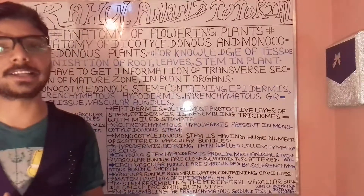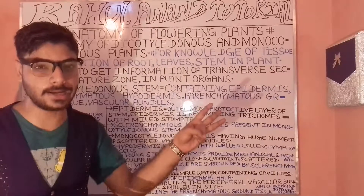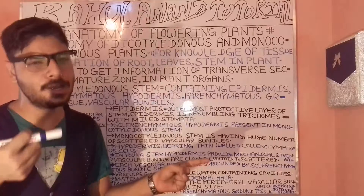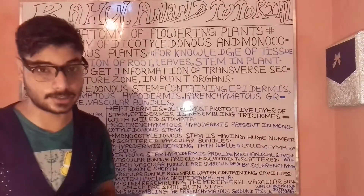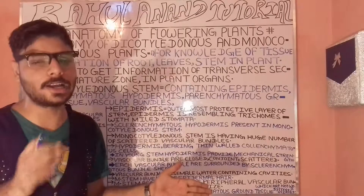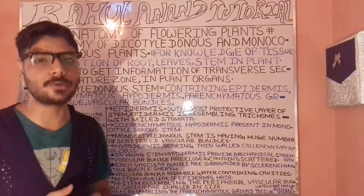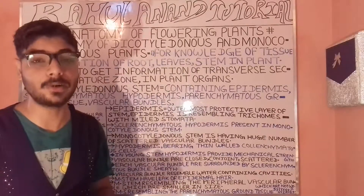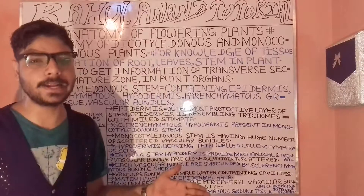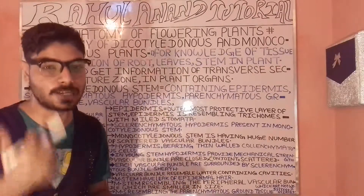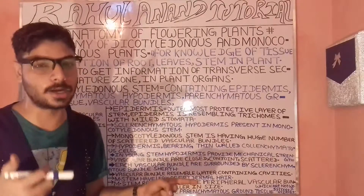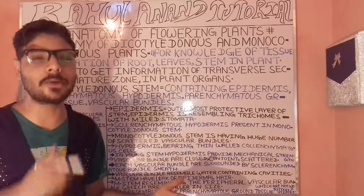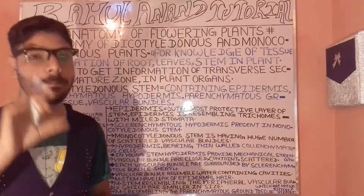Xylem is composed of three broad parts: the tracheids, the vessels, and the xylem parenchyma. The tracheids are cubicle-shaped structures playing an important role to transport water and minerals. The vessels also bear a cubicle-shaped structure and play an important role to trap water and minerals at their final stage.